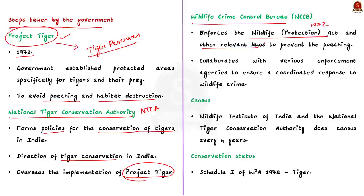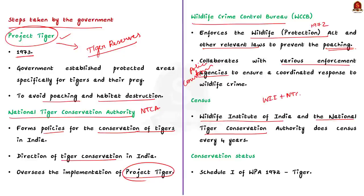The third important step is the Wildlife Crime Control Bureau, which enforces the Wildlife Protection Act and other relevant laws related to poaching, killing, trafficking, and trading of tigers and their derivatives. It collaborates with various enforcement agencies such as police, customs, and border control to ensure a coordinated response to wildlife crime. The Wildlife Institute of India and NTCA conduct a periodic tiger census every 4 years. Finally, the government has placed the tiger in Schedule I of the Wildlife Protection Act 1972, which offers tigers maximum protection.